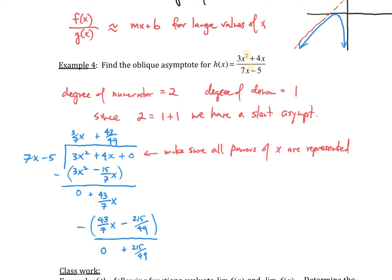So what did I just realize happened? Let's write it out. So what happened is that my h of x, which was equal to 3x squared plus 4x all divided by 7x minus 5, is exactly equal to 3 over 7x plus 43 over 49 plus 215 over 49 divided by 7x minus 5.